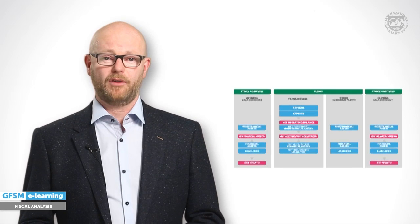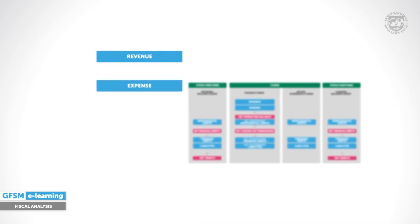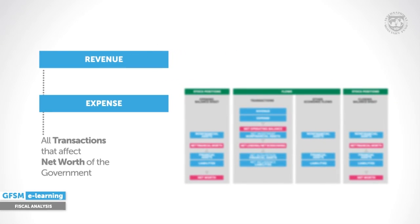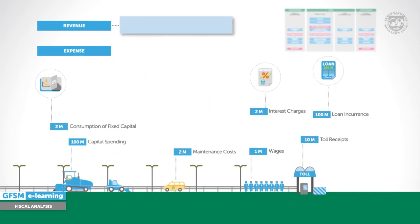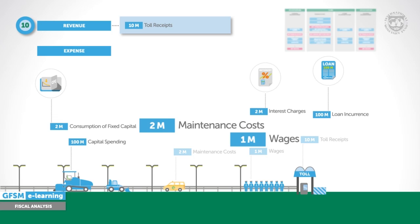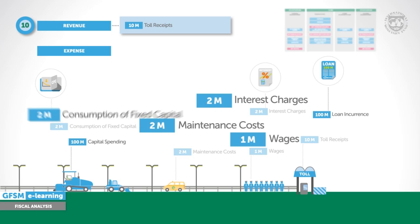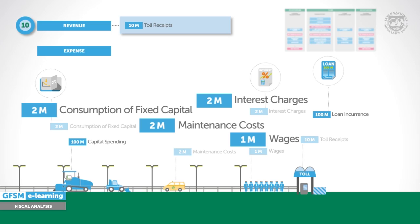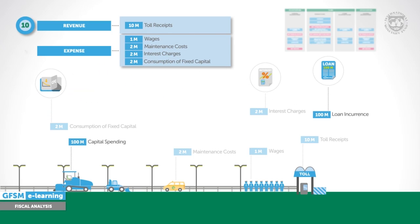First, let's look at the operating flows — revenue and expense. That refers to all transactions that affect the net worth of the government. The toll receipts will add to net worth — that's revenue. Wages, maintenance and other costs, interest payments, and the charges for the wear and tear of the assets, called consumption of fixed capital in statistics — all those flows decrease net worth and are clearly expenses.